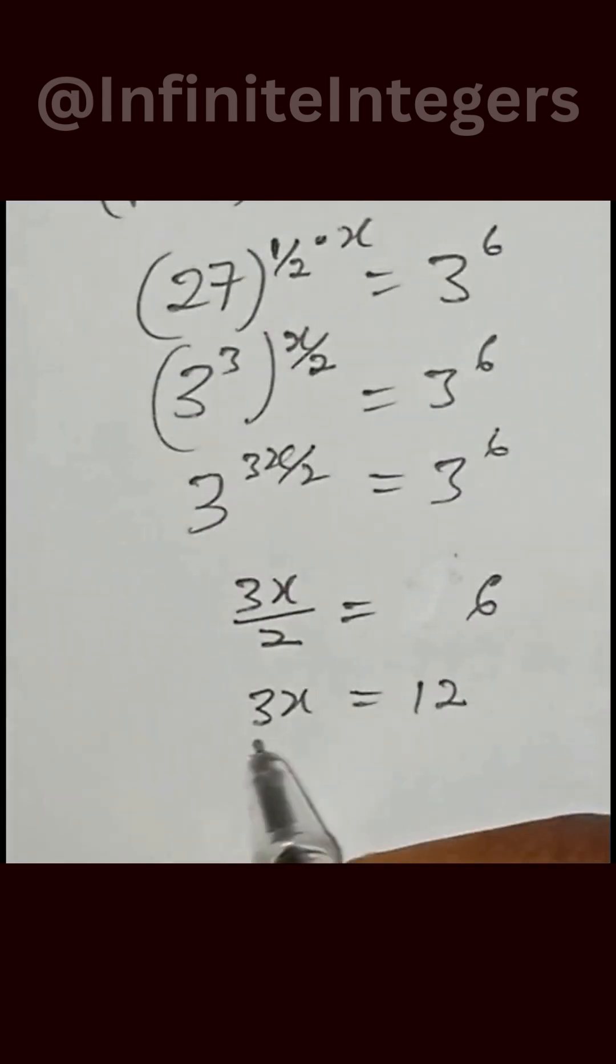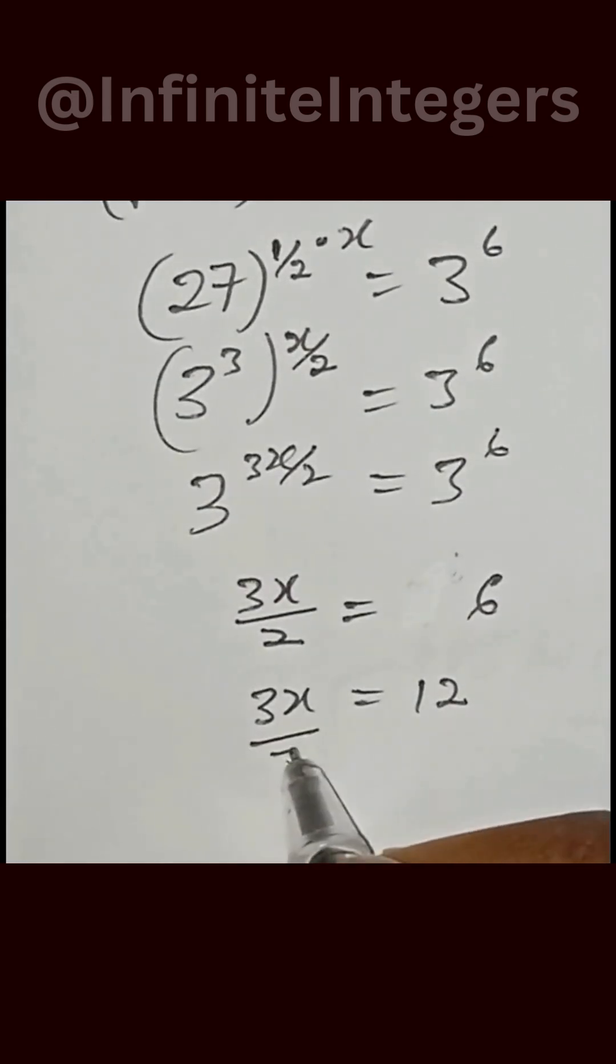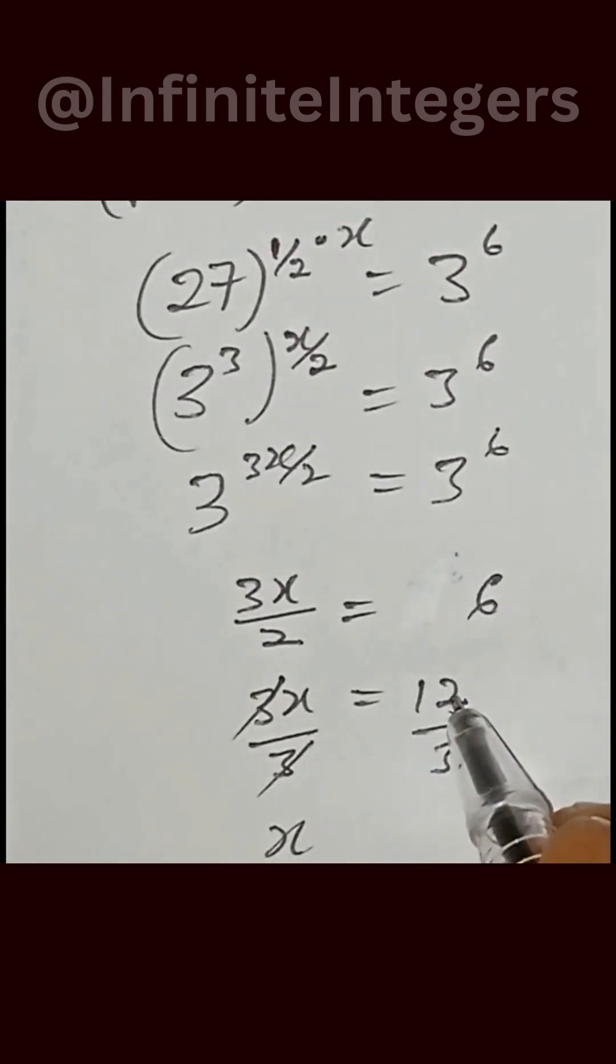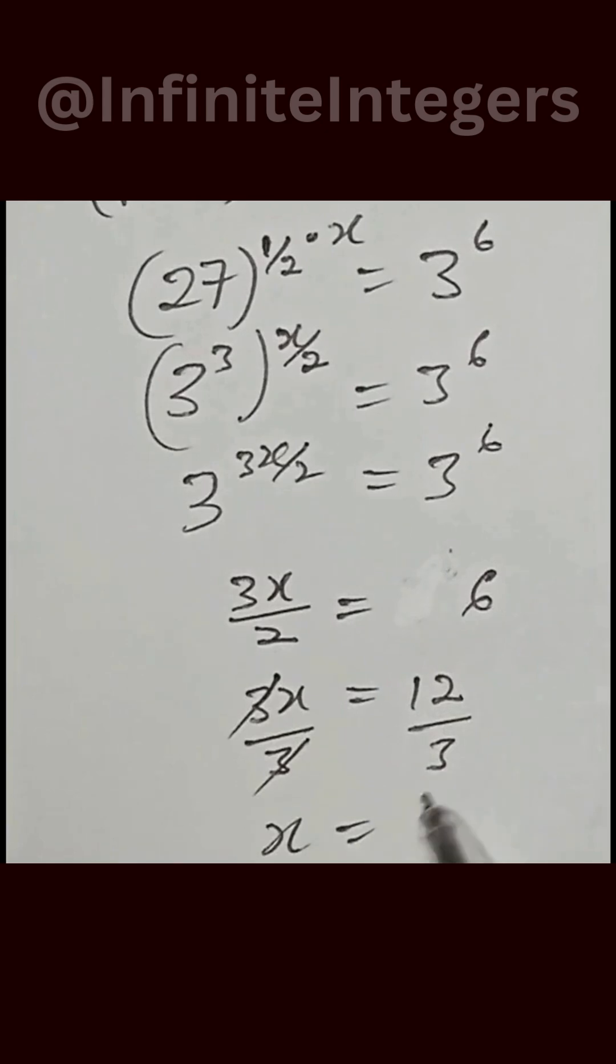Then divide both sides by 3. Cancel all this, cancel all this. Then x is equal to 12 divided by 3, we have 4.